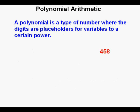A polynomial is a type of number where the digits are placeholders for variables to a certain power. In this number, 458, we have the number 8 in the ones place, the number 5 in the tens place, and the number 4 in the hundreds place. So this number, 458, is really a composite number of 8 ones, 5 tens, and 4 one hundreds.